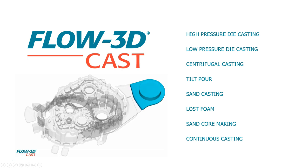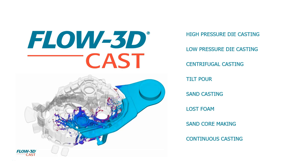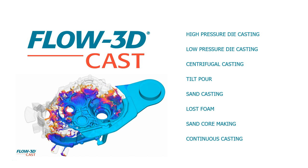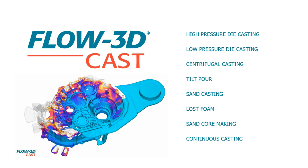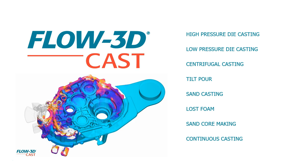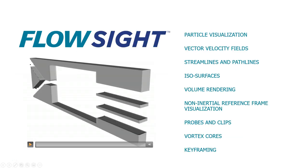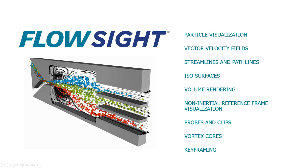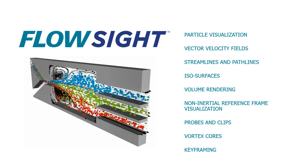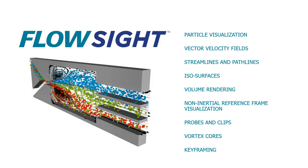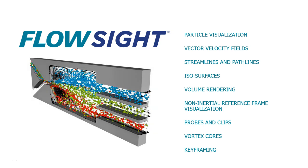Flow3Dcast is specific to metal casting applications and delivers highly accurate flow and solidification results necessary for capturing critical casting defects, including surface oxides, entrained air, macro, and micro porosity. FlowSight is an advanced post-processing tool designed to deliver sophisticated visualizations of Flow3D and Flow3Dcast results and is included with both products.